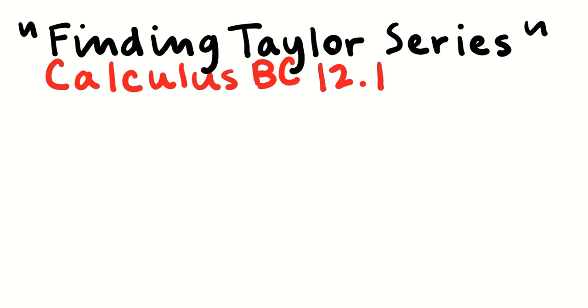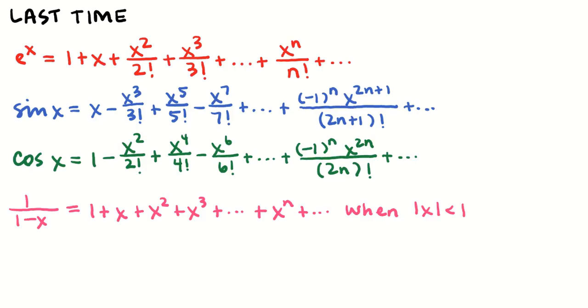Welcome back. In this video, I'm going to show you how to find a Taylor series. But before I do that, I want to remind you about what we talked about last time. Last time, we came up with formulas for polynomial representations of e to the x, sine of x, cosine of x, and 1 over 1 minus x. We'll use those a little bit today, but we really just need to know these for problems as we move forward.